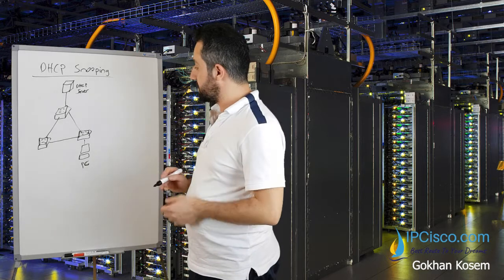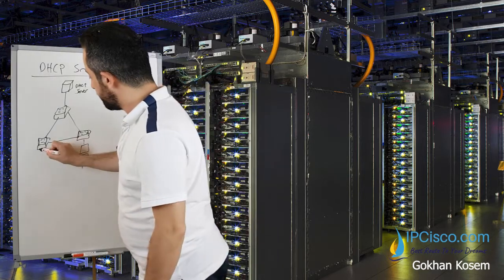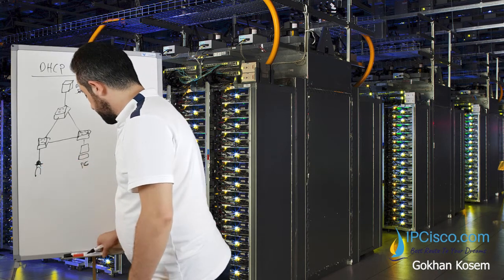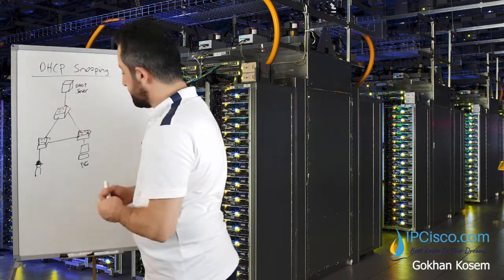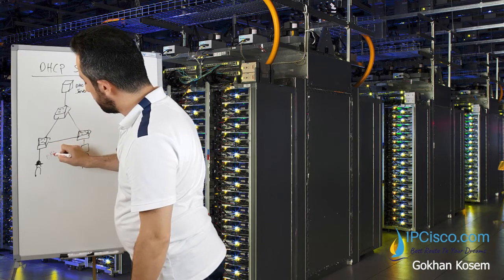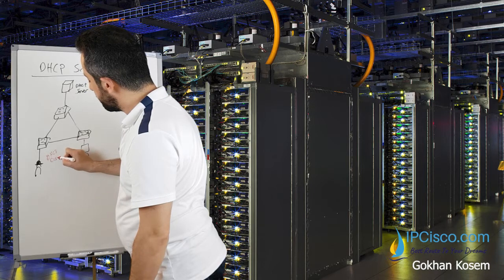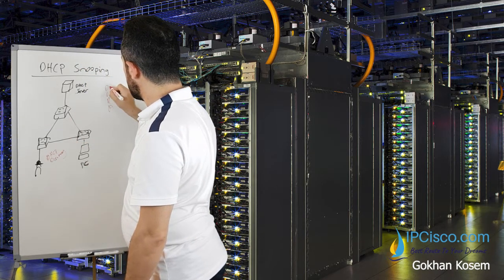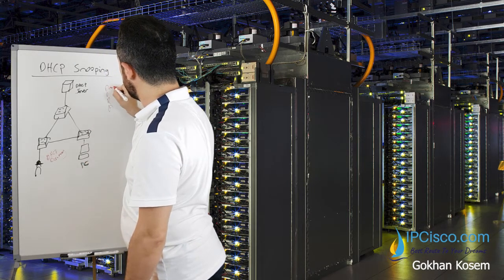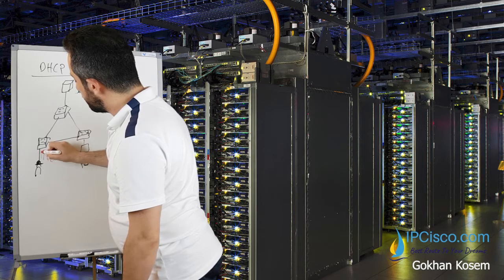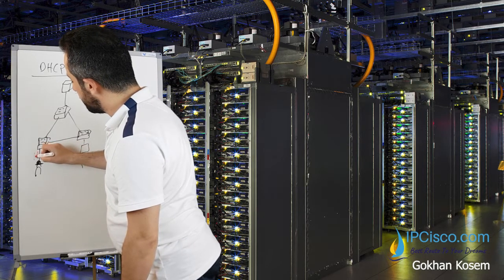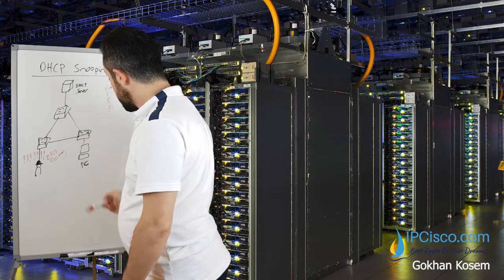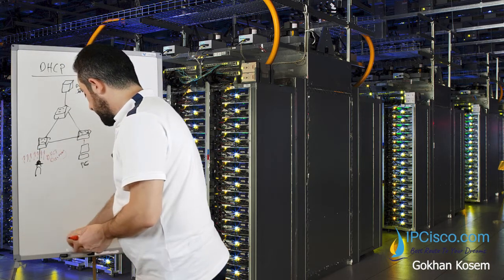In the second DHCP attack example, there is a hacker who uses DHCP discovery messages. Remember DORA — the first message is Discovery. The hacker sends a large number of discovery messages asking 'are there any DHCP servers?' repeatedly, and the DHCP server keeps replying to all of them.